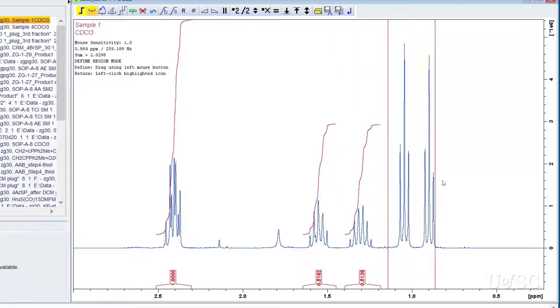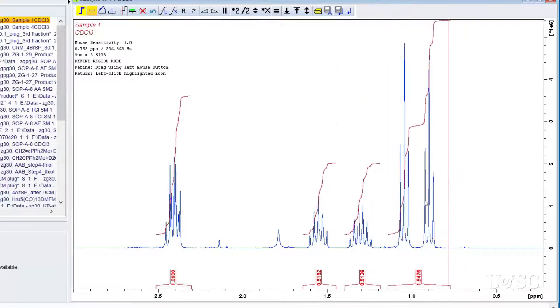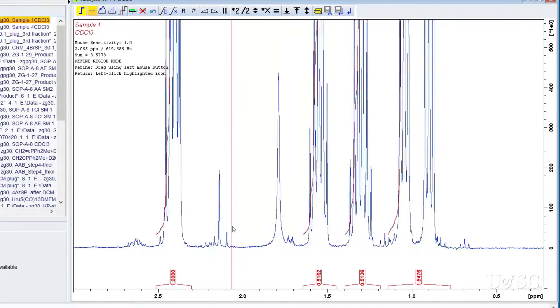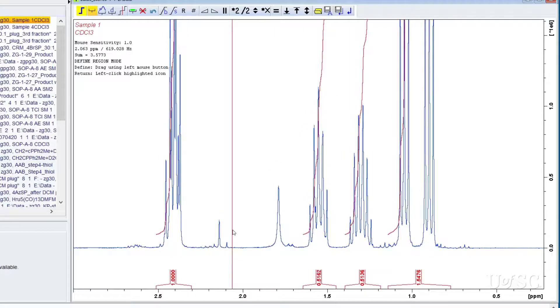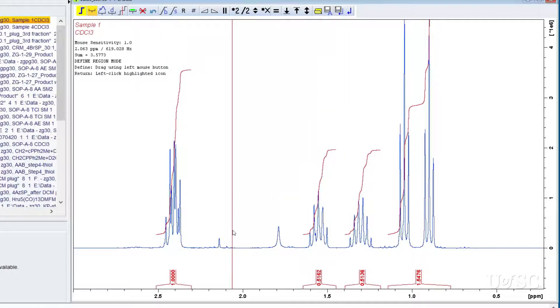You should always leave some baseline on each side of a peak because NMR line shapes are Lorentzian and tail off very gradually. You will lose significant intensity if you cut the region too tightly. For this reason, it is always difficult to integrate peaks that are very close to each other.